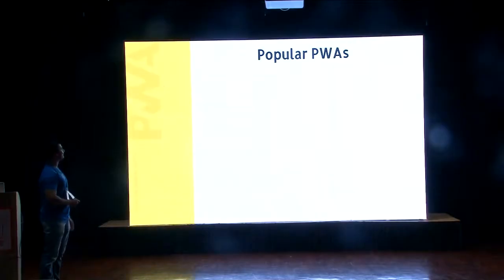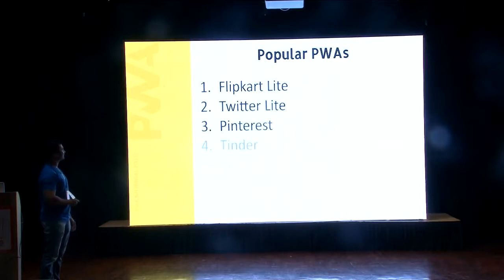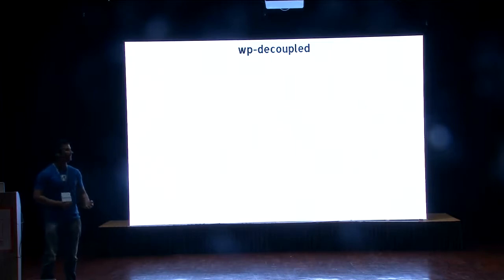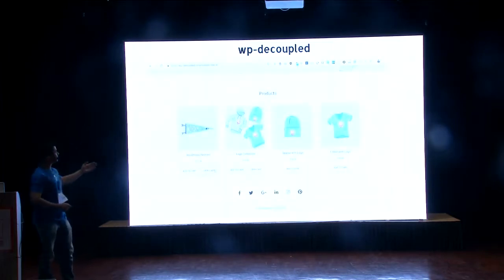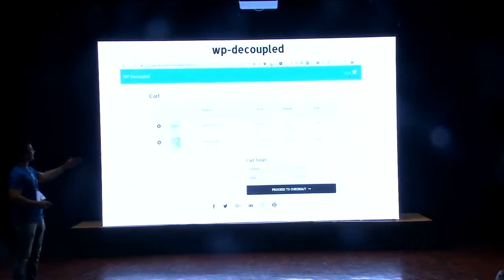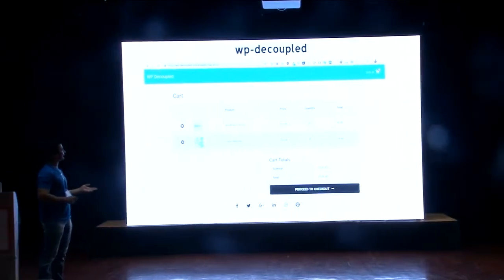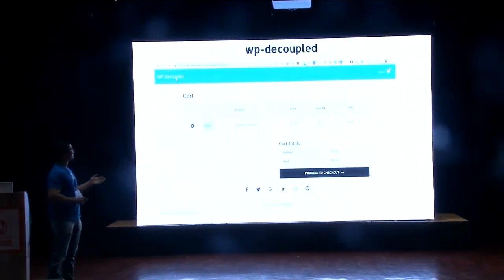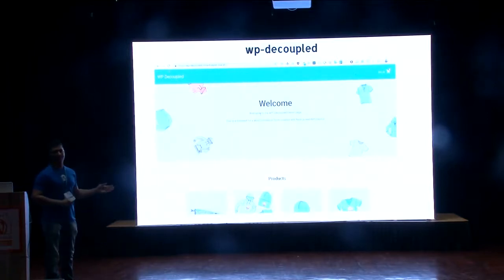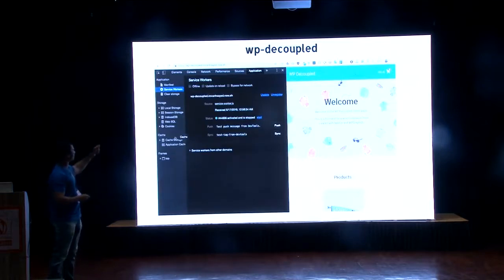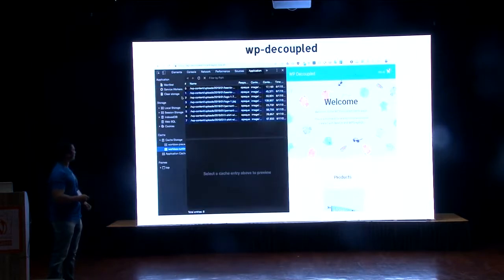Popular PWAs include Flipkart Lite, Twitter Lite, Pinterest, Tinder, OLX, and Trivago. At Articam, we are also building a progressive web app — a WooCommerce store in React which works offline. You can add products to the cart, increase or decrease quantities, all happening in React without manual updates. You can go offline and this app works there as well. The app works offline and data is stored in the Cache API.